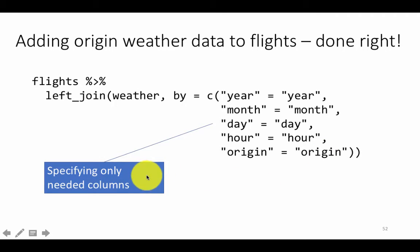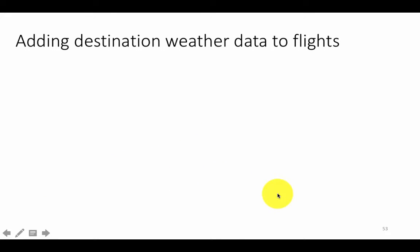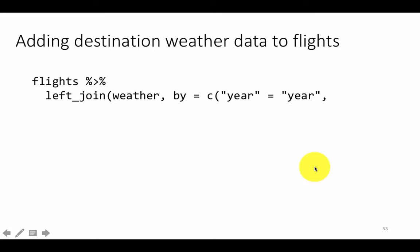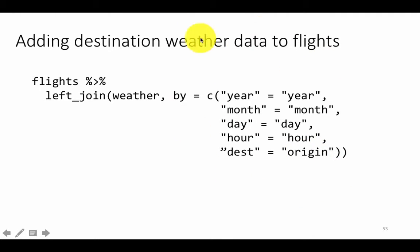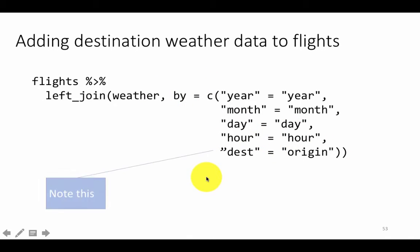Now let's look at how to add destination weather data to flights. It's very similar to adding origin weather, except for one small difference: instead of saying origin equals origin, we say dest equals origin, because in the flights table that field is called DEST, while in the weather table the airport is still called origin. However, if you run this, you won't get any results because the weather data doesn't have weather information for destination airports — so this won't give meaningful results, but it demonstrates the syntax.